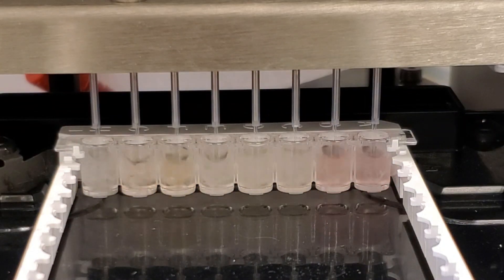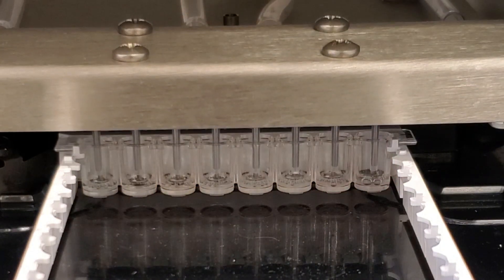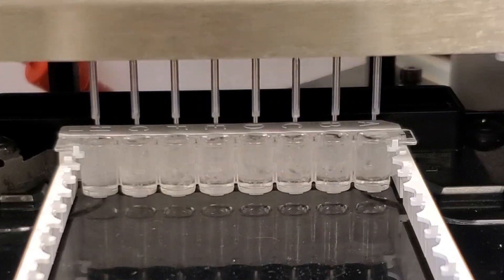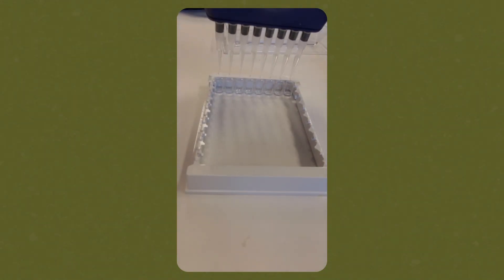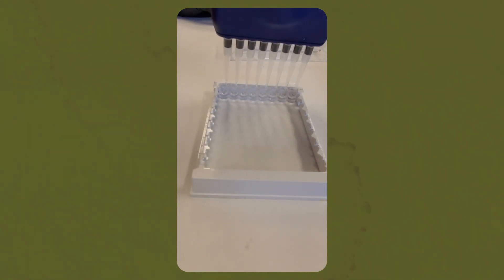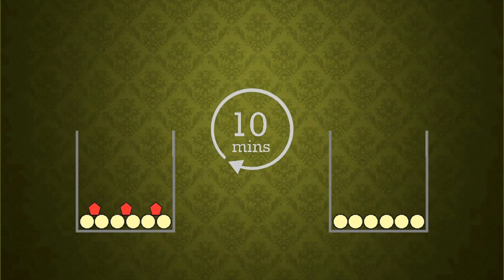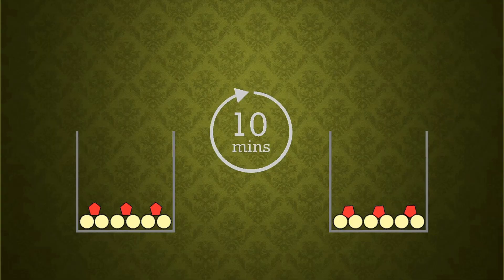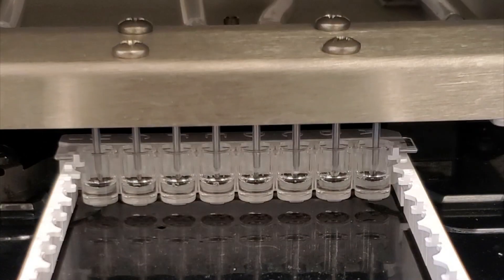Next, we wash the plate to remove any material not bound to it. Then, we add a conditioning buffer to the plate. After sitting for 10 minutes, the conditioning buffer changes conformation of the prion on the ligand. The plate is washed again to remove the conditioning buffer.